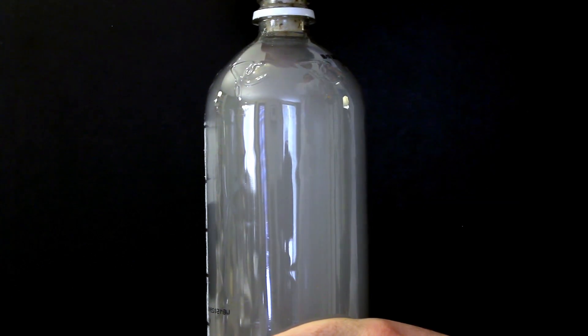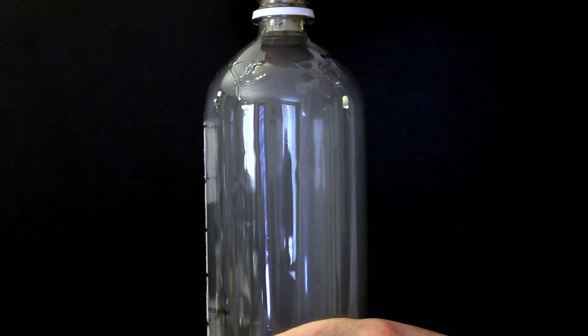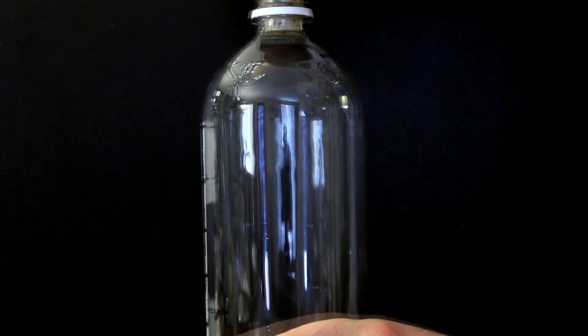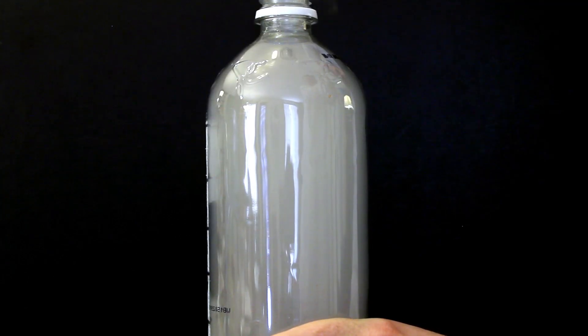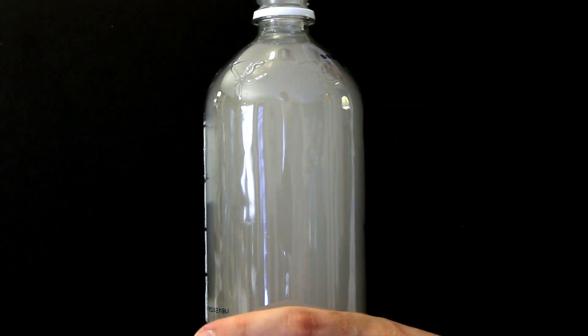If we increase the pressure in the bottle again by adding more air, the cloud will evaporate and disappear. When the cork is removed once again, the gas will quickly condense back into a cloud.